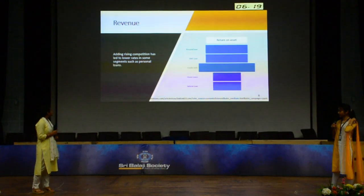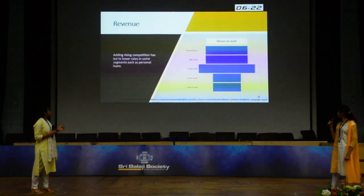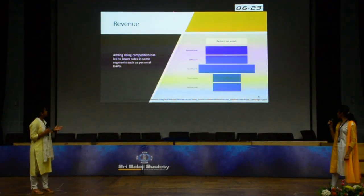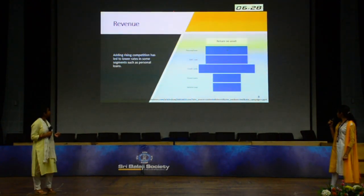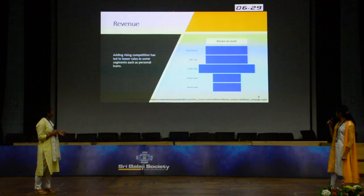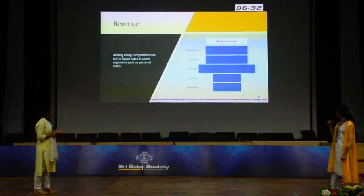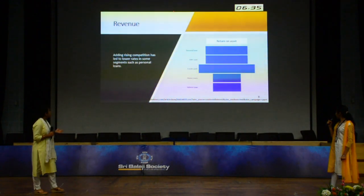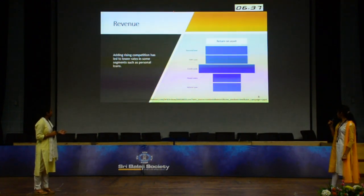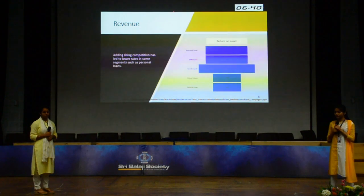Now we have the revenue size. Personal loans, small and medium enterprise loans, and credit cards are categorized as unsecured loans — with personal loans at 3%, SME loans at 3%, and credit cards at 4% respectively. Home loans and vehicle loans are categorized as secured loans, each at 2%.